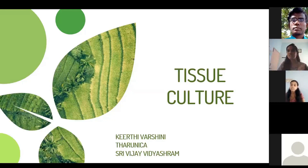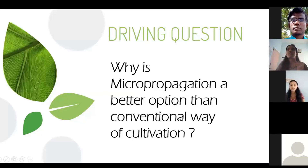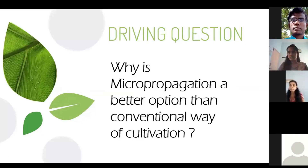Now, let's move on to the driving question of our project: Why is micropropagation a better option than the conventional way of cultivation? The conventional way of cultivation is nothing but cultivating plants in a traditional and natural way, that is, growing them in the soil.